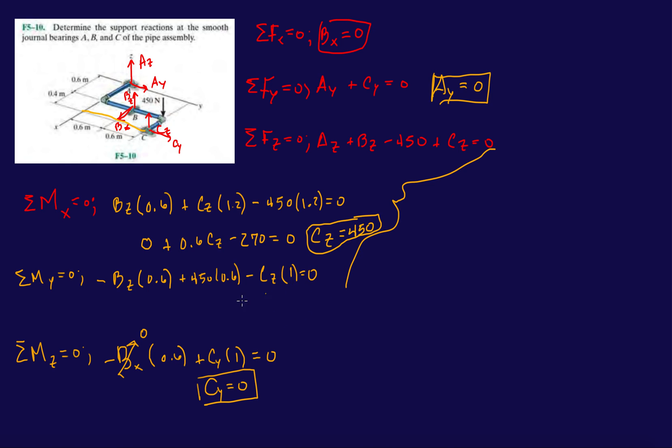And then I'm just going to go back to either equation here and solve for B_z. So here I'm just going to say B_z, it's going to be 450 times 0.6 minus 450 divided by 0.6. And that's 300 Newtons.